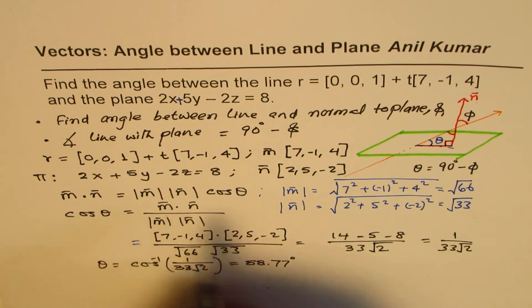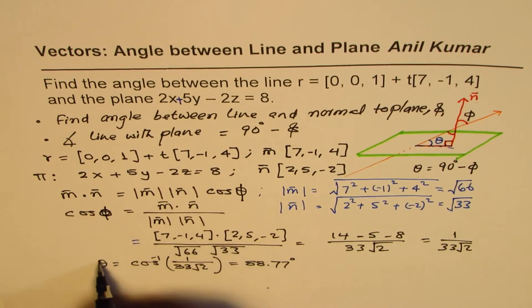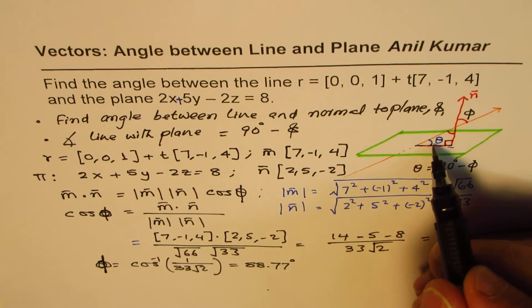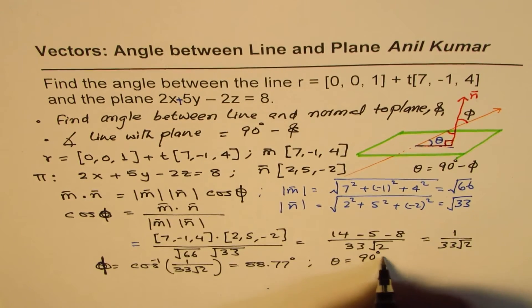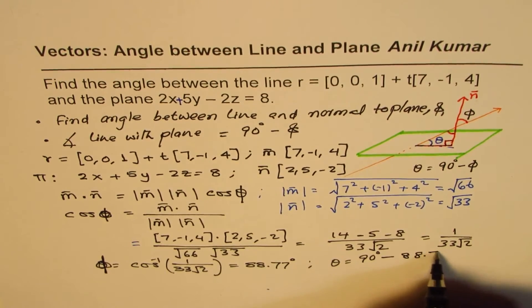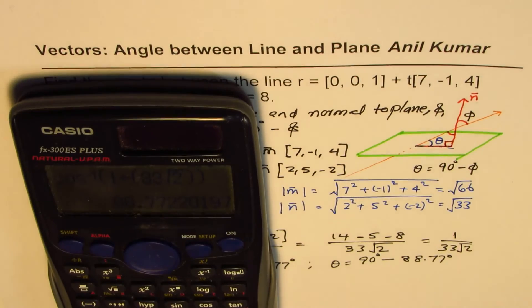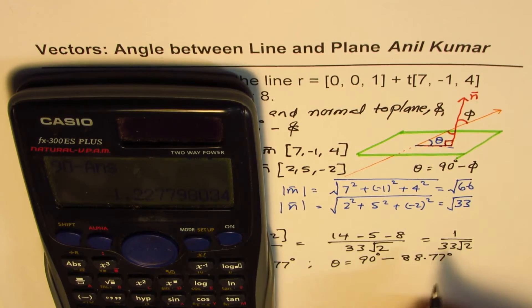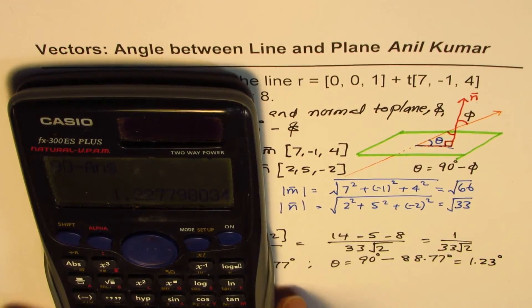Well, I should not have written theta, we found this angle which is phi. So what we found is the angle between normal and the line, not the angle between the line and the plane. Therefore, we have θ = 90° - 88.77°. That's a very small angle. So it is 90 minus the answer, that gives us 1.23 degrees, just 1 degree.